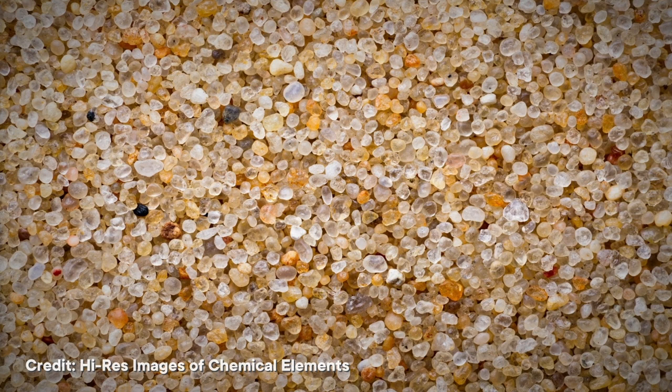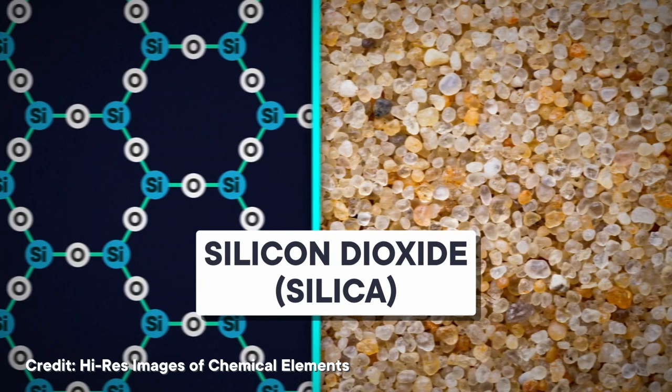If you melted the ice and then froze it again, it would crystallize again. Glass, on the other hand, is different. Glass is mainly made out of sand, which consists of silicon dioxide, also known as silica. And the silica in sand has a crystalline structure.